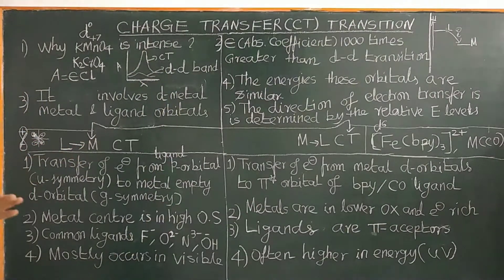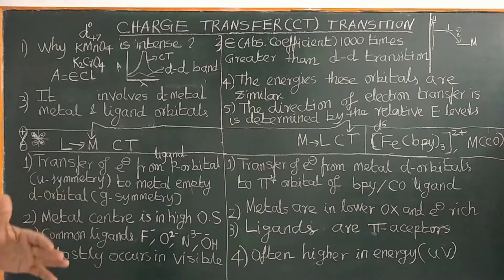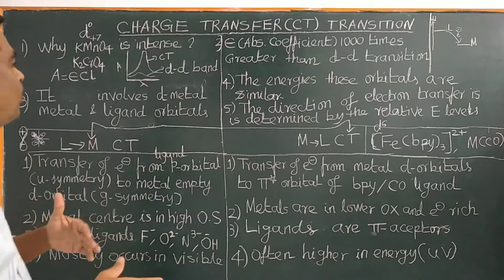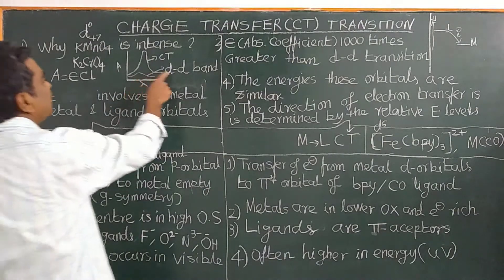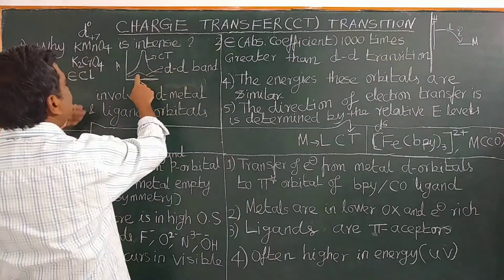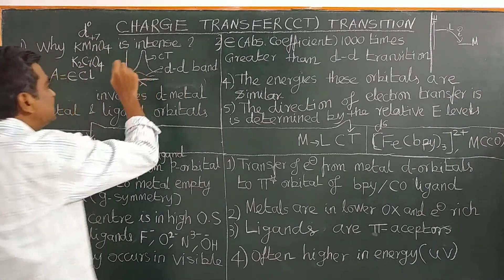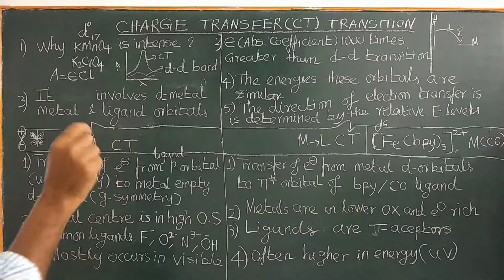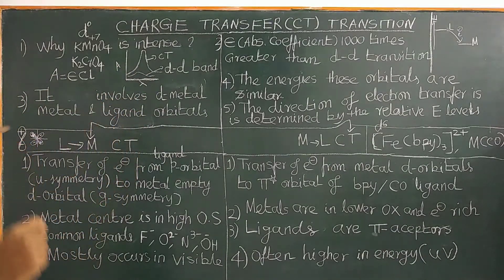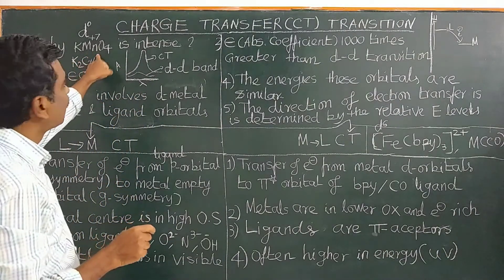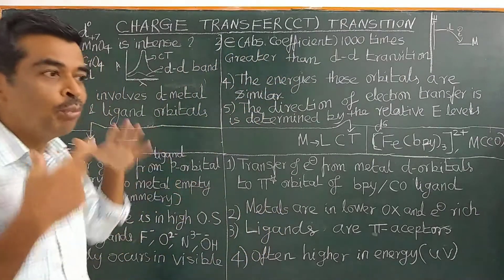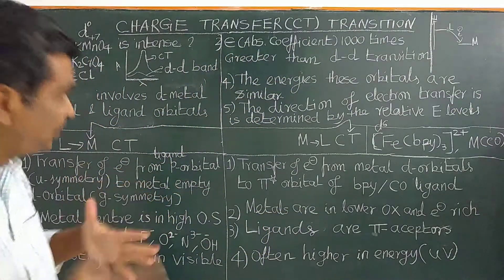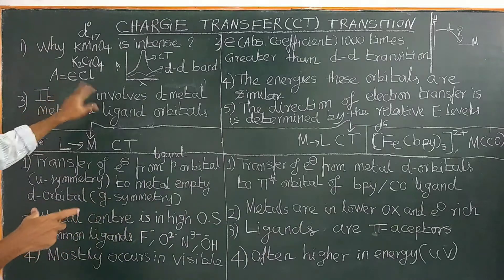Whereas for the d-d transition — we have studied what is d-d transition in crystal field theory in the previous video. The d-d band intensity is deep; it is not intensely colored. Whereas potassium permanganate is intensely colored because of its high molar absorption coefficient. What is molar absorption coefficient?